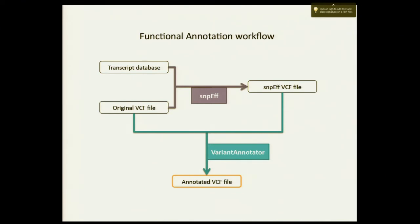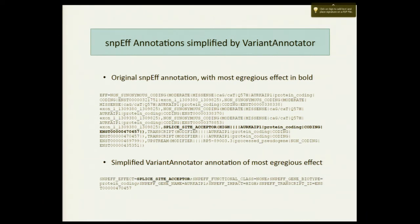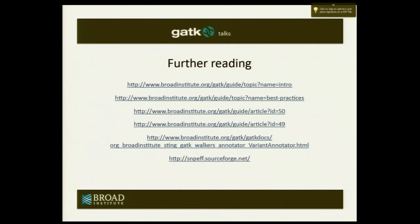At that point, you have an annotated VCF file with all the functional information for all your sites in the file. So what does the original annotation look like? It's all this data, and this was the most egregious event — it happened to be in a coding region and it affected the splice site. When you look at the new record in the annotated VCF using the variant annotator, you only have this much data. You see exactly what the effect was. The SnpEff impact — it's a high impact, a really bad thing. There's high, medium, moderate, low — these are all mentioned on the website. This information is added to the info field of the VCF file. And that is all we have to say about functional annotation.